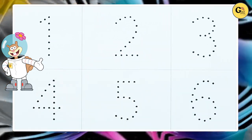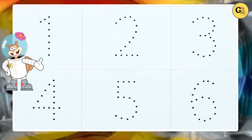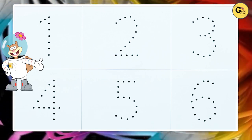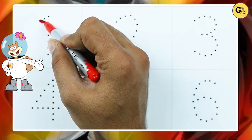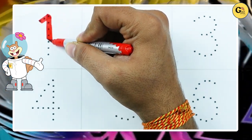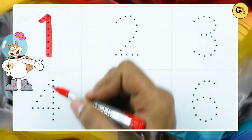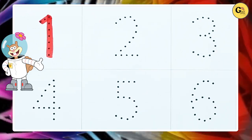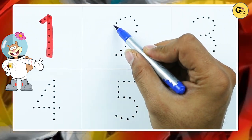Let's start — how to write numbers 1 to 10. It's number 1, yes, number 1 with red color. Number 2.